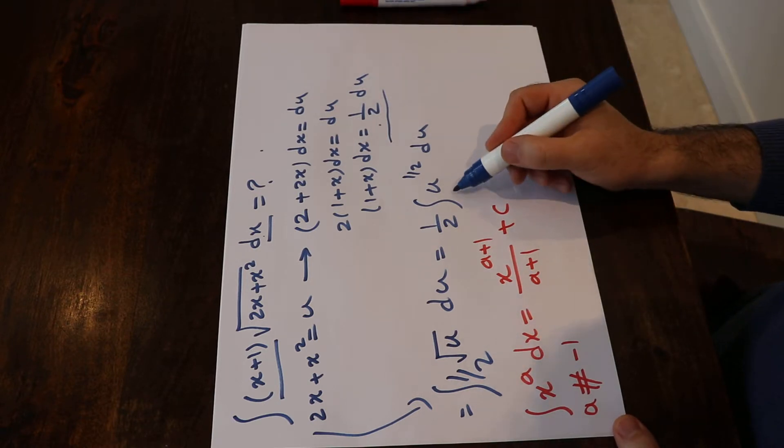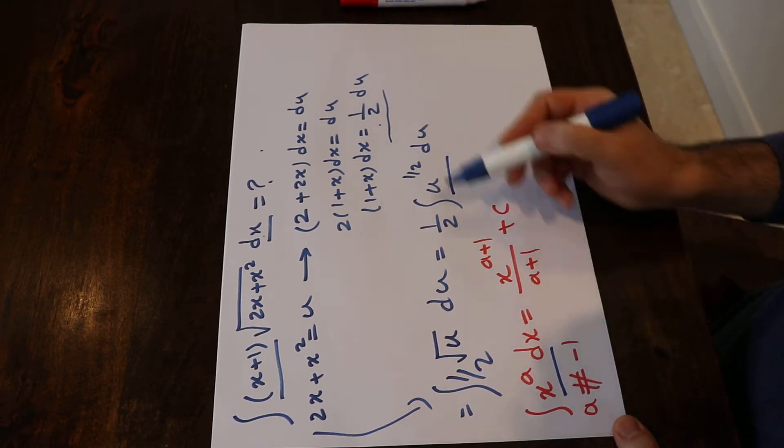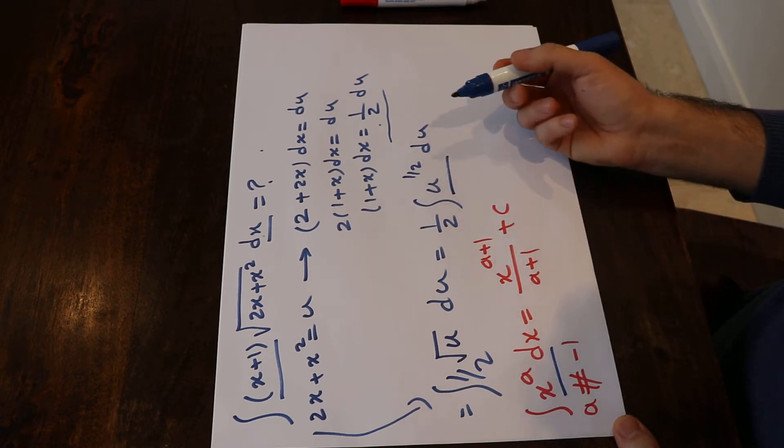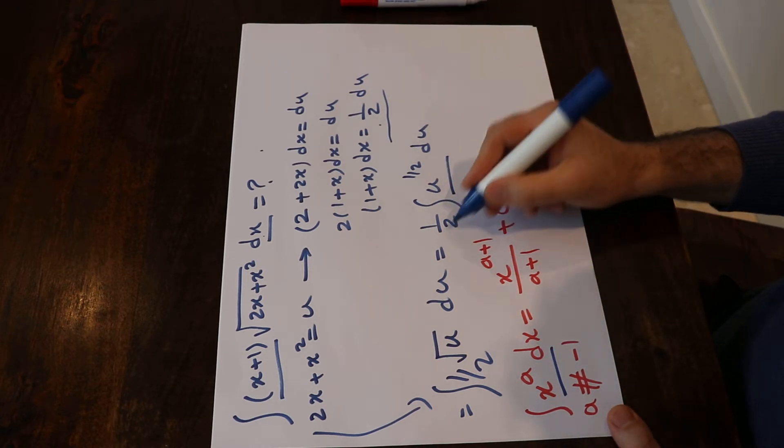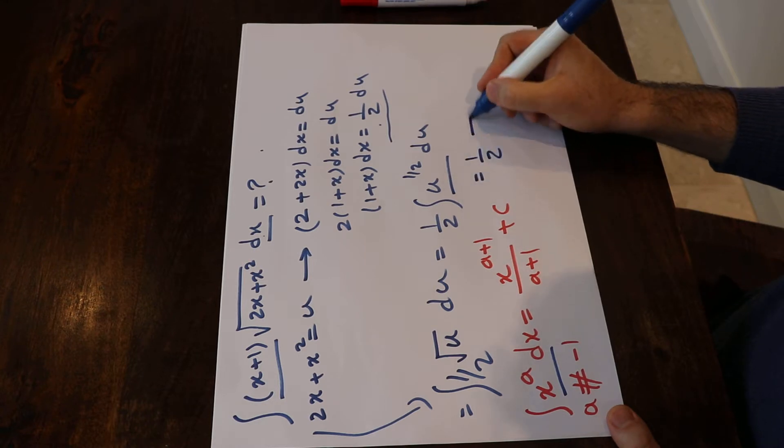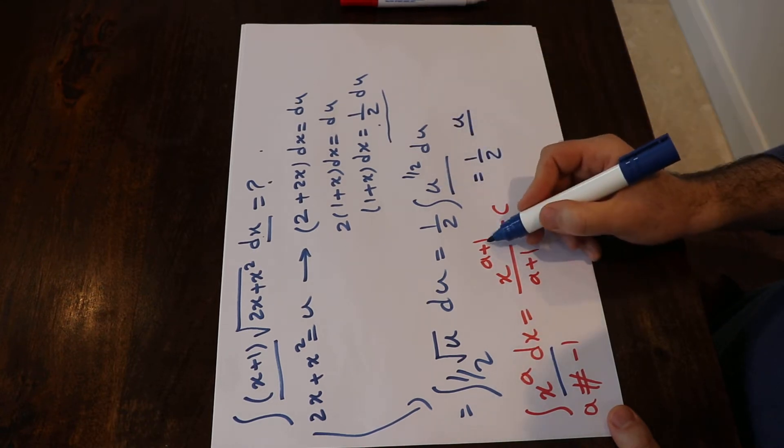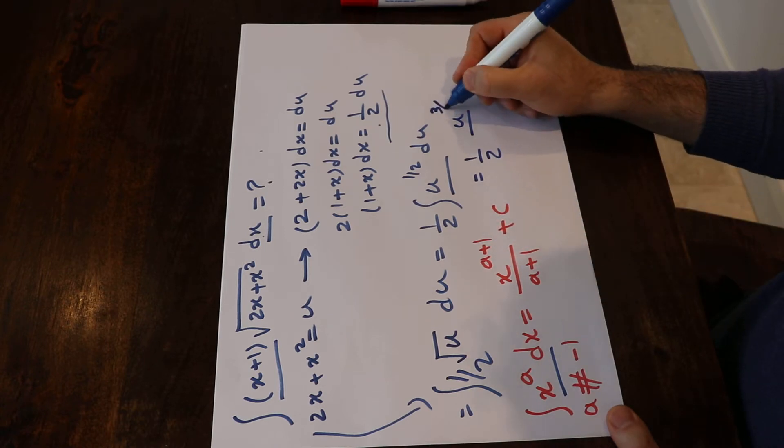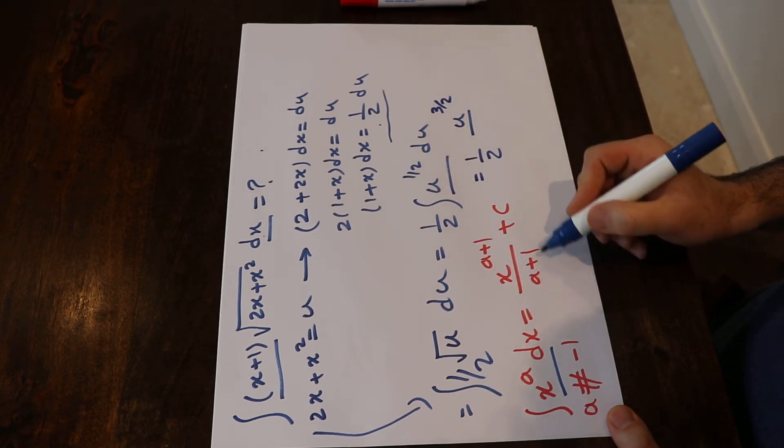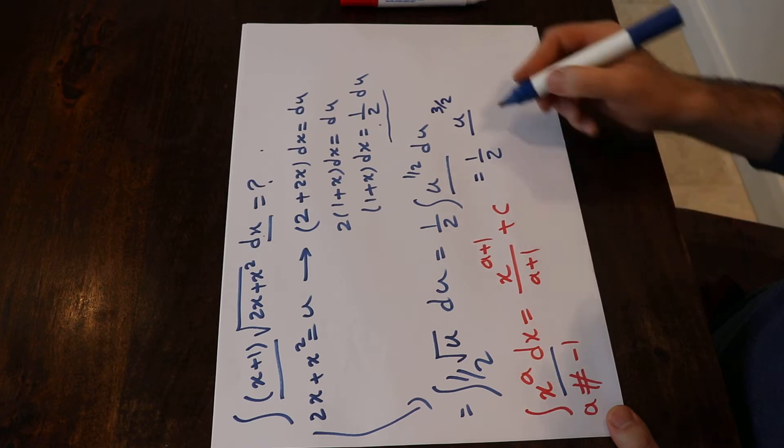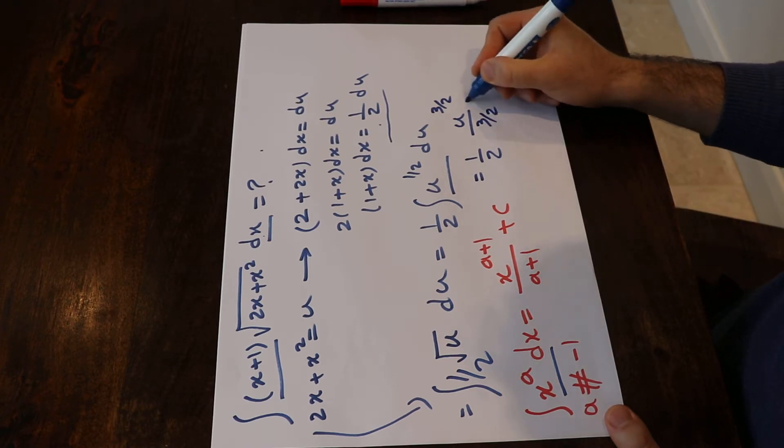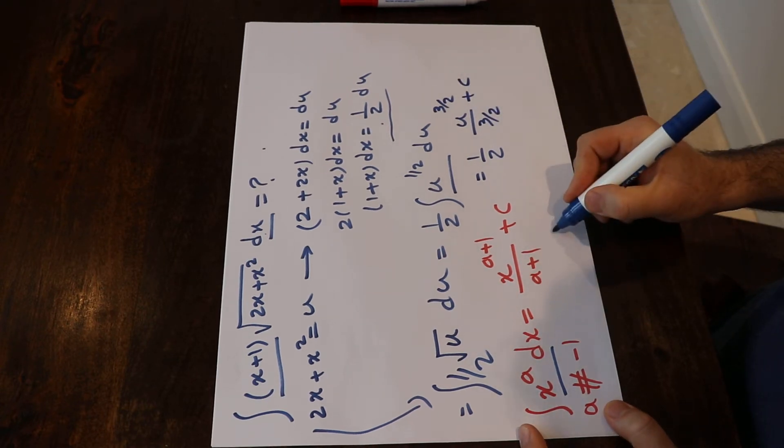And so this integral has the same format as this one. In this particular case, a is equal to ½. Therefore, this will be equal to ½ times u^(a+1), that is ½+1, which will be 3/2, divided by a+1, that is ½+1, which is 3/2, plus c, which is the constant of the integral.